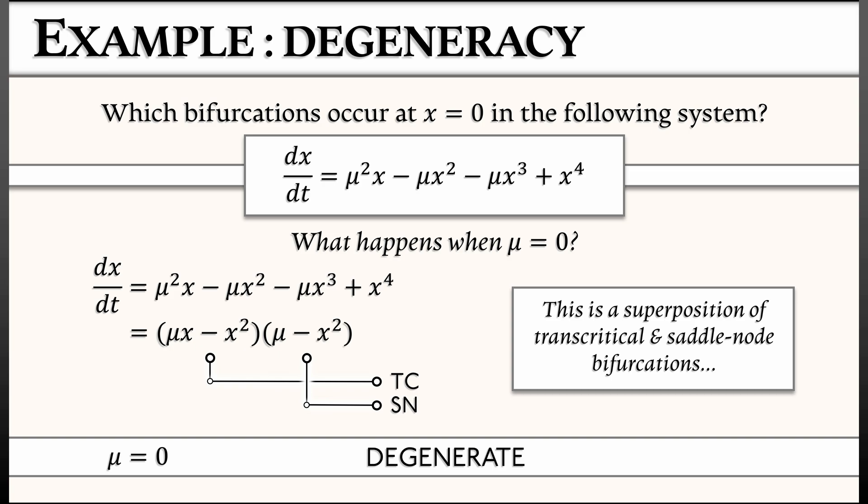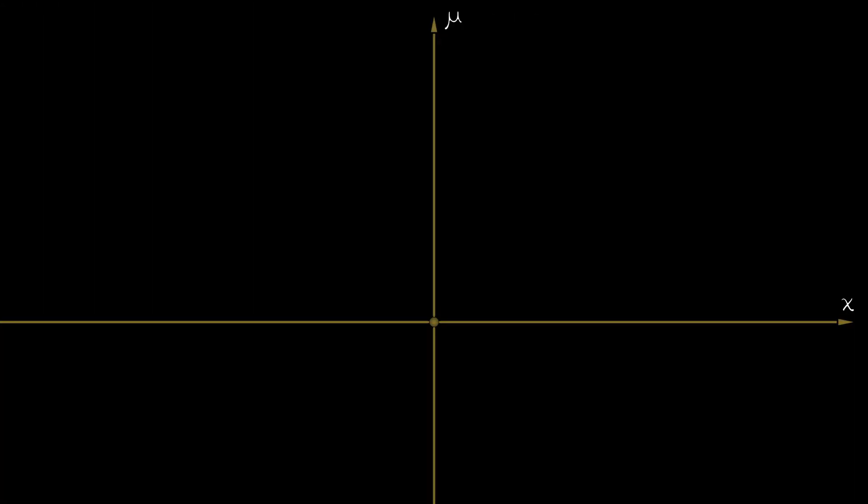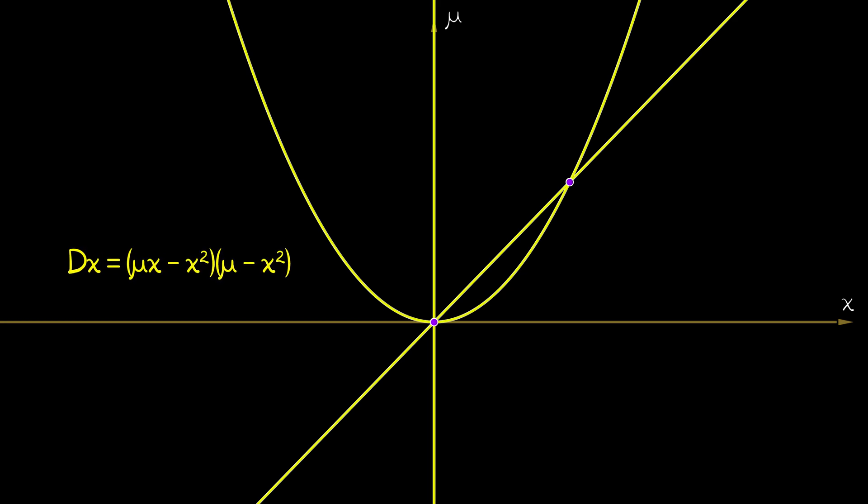Now as to what that degenerate bifurcation looks like, well, that's not much of a mystery. If we plot out in the x-μ plane where the equilibria are, we see that we have the equilibria for a saddle node and we have the equilibria for a transcritical.